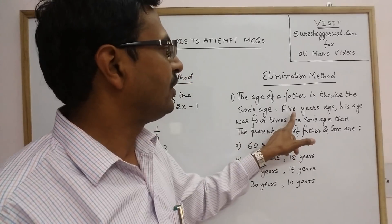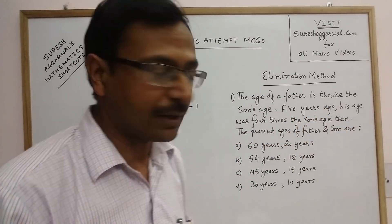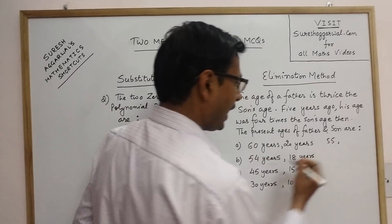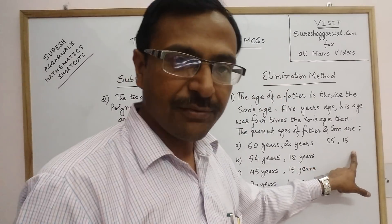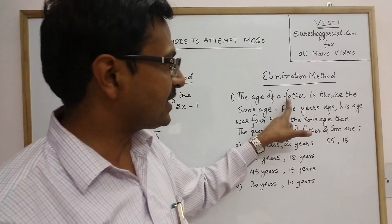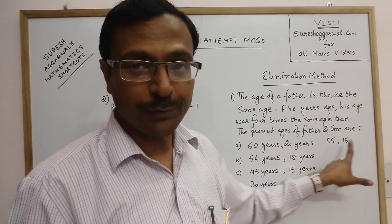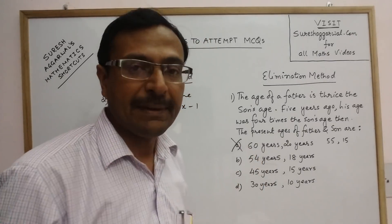Now, let us see the second part. Five years ago, we are talking of the ages five years back. So, 60 becomes 55 and 20 becomes 15. This is the ages five years ago. What is the condition? His age means father's age was four times. Now see, 55 is not four times 15. So, your option number A is eliminated.